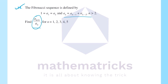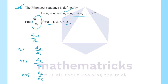The sequence is defined by a_n. We have a_{n+1} divided by a_n. For n equal to 1, that is a2 divided by a1. For n equal to 2, that is a3 divided by a2. For n equal to 5, that is a6 divided by a5.